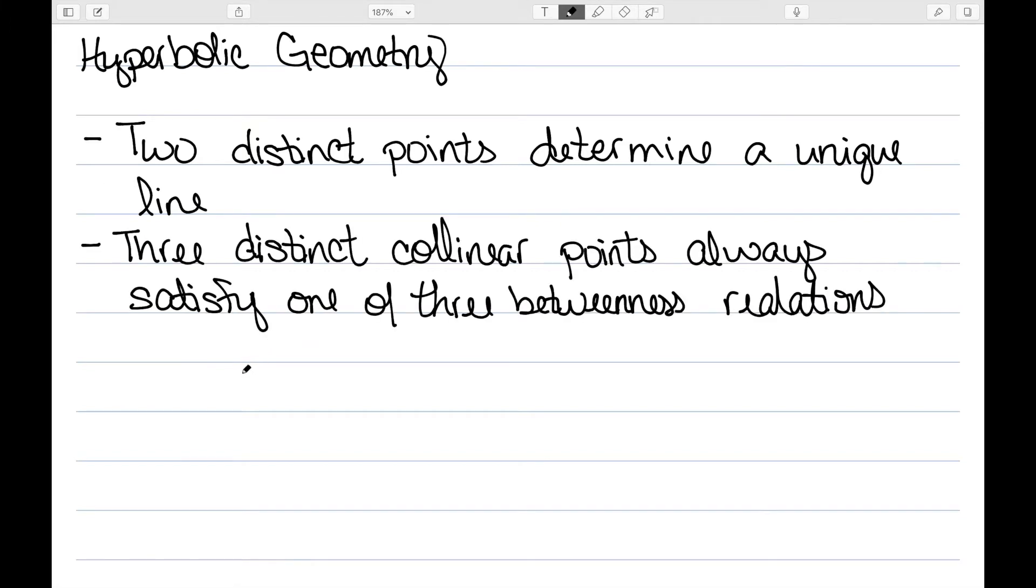The second, three distinct collinear points always satisfy one of the three betweenness relations. So if I have three points on a line, I have to have either ABC, ACB, or BAC. And this is something else that was not true in spherical geometry.